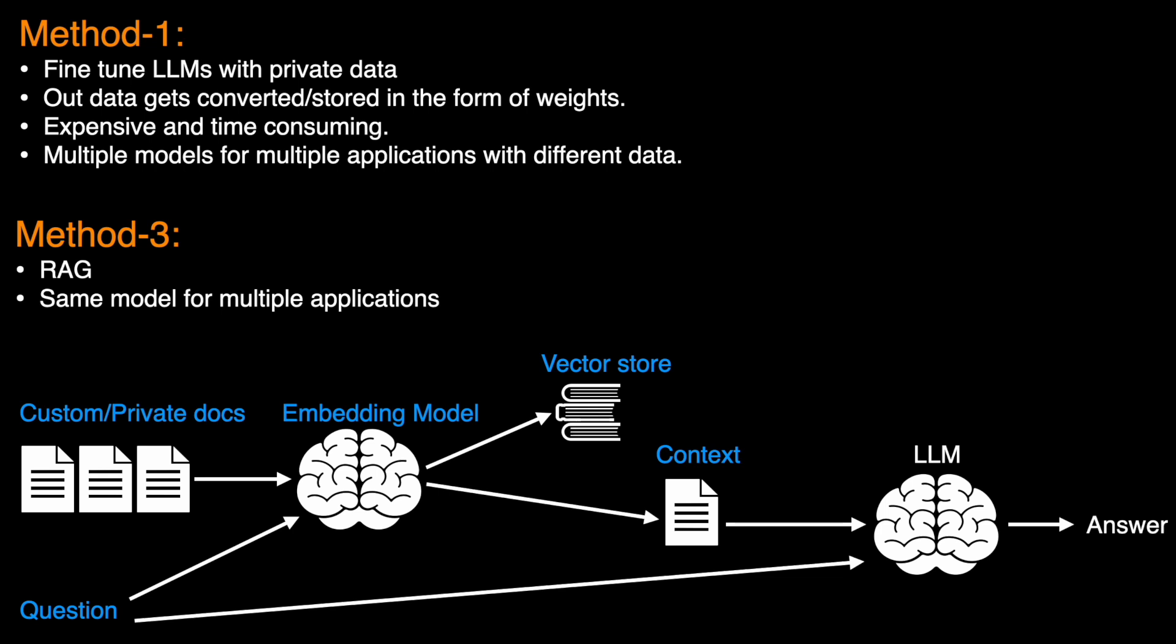In method 1, we can fine-tune the LLMs on our private data so that the data gets converted or stored in the fine-tuned model. But this process is very expensive, time-consuming and we also need to prepare the training data. And more importantly, we need to train multiple models for multiple applications requiring different data.